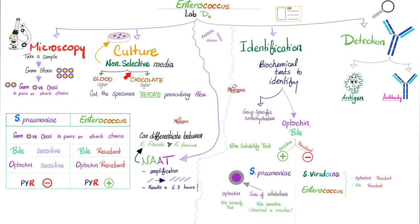High temperature, low temperature — enterococci will survive it. That's why it's non-selective. You can also use nucleic acid amplification tests, which can help you differentiate between different subtypes of enterococci, including the difference between Enterococcus faecalis and Enterococcus faecium. For biochemical identification, we use the optochin test and the bile solubility test.